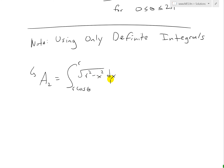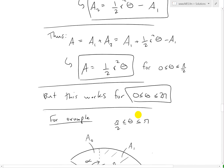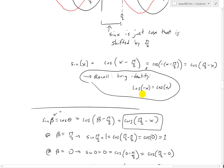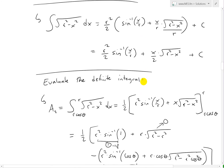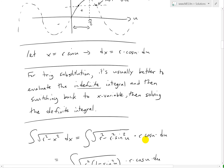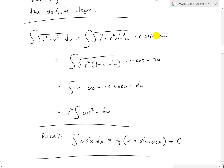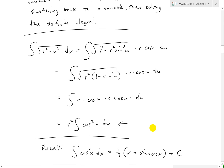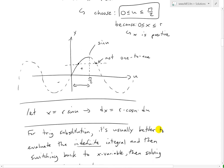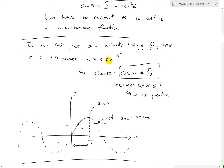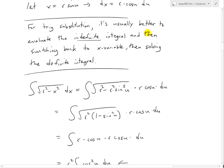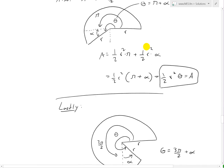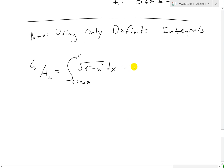Now this was equal to — going back — when we defined it using trig substitution, we let x = r·sin(u), with u defined as greater than or equal to 0 but less than or equal to π/2, to make sure it's a one-to-one function. So this equals r² times the integral of cos²(u) du.